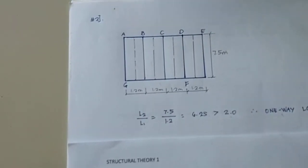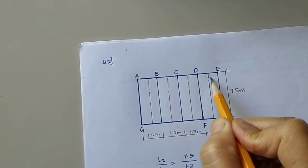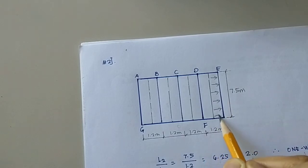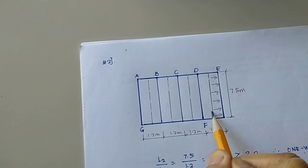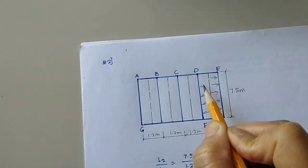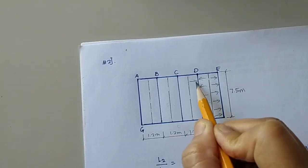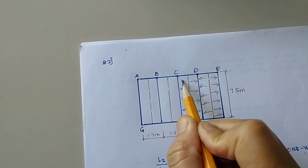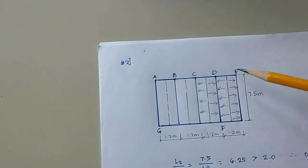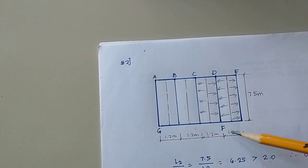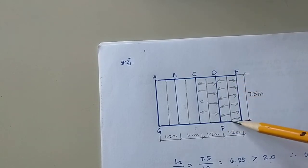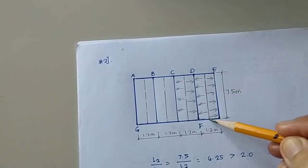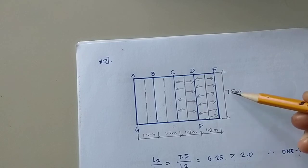Therefore, if it is a one-way loading system, the flow of the loads is towards the edge beam. For the edge beam, half of the tributary area. And for the center beam, the whole tributary area. So the tributary area of purlin DF is 1.2 by 7.5, and for the edge beam or edge purlin it will be 0.6 multiplied by 7.5.